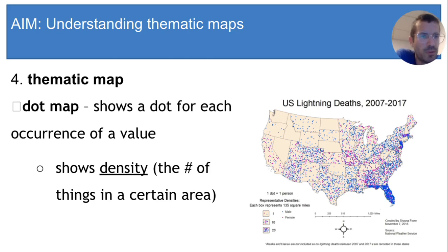In this map, US lightning deaths, each dot represents one person who was killed by lightning. By using dots, we can easily see that there are a lot of lightning deaths in Florida. Look how closely packed or dense the dots are in that state. Seems like a scary place to live.